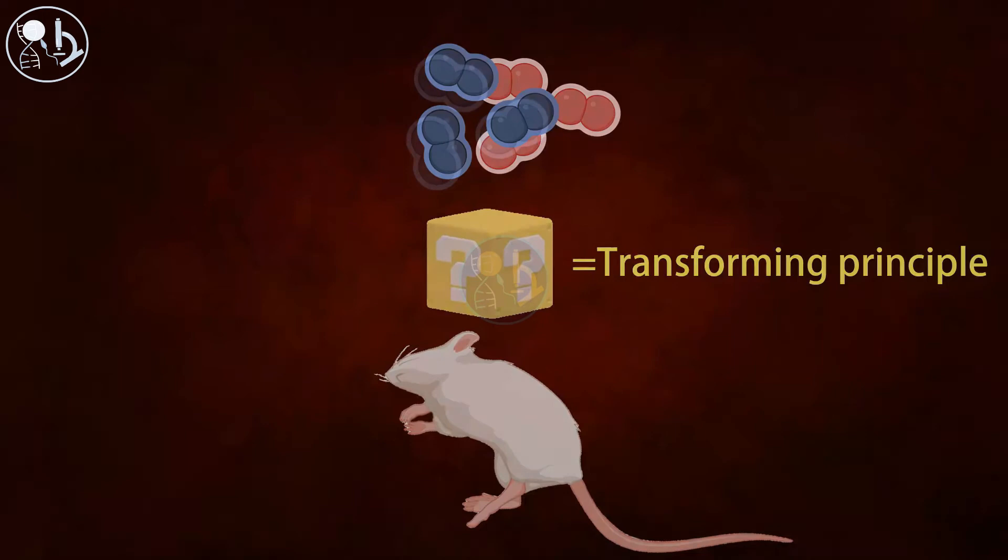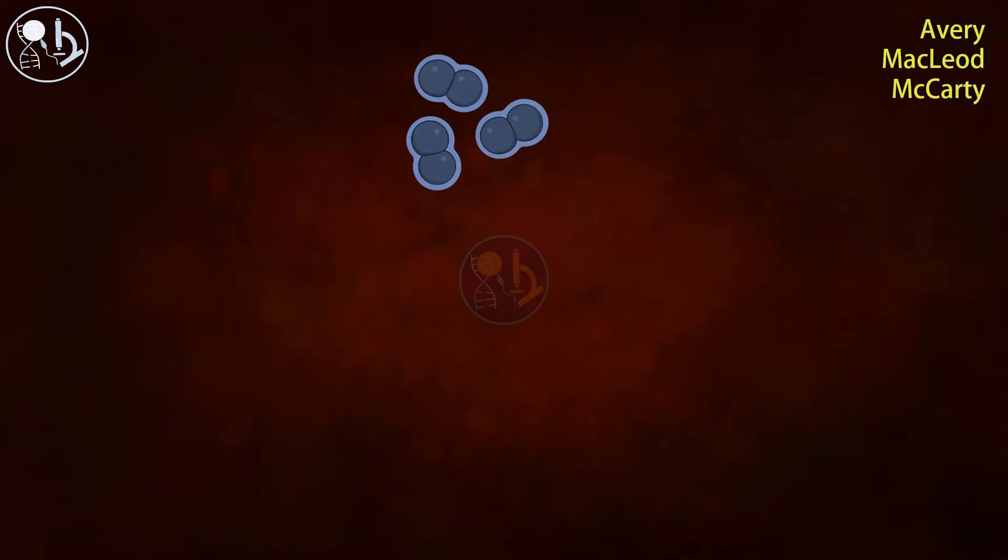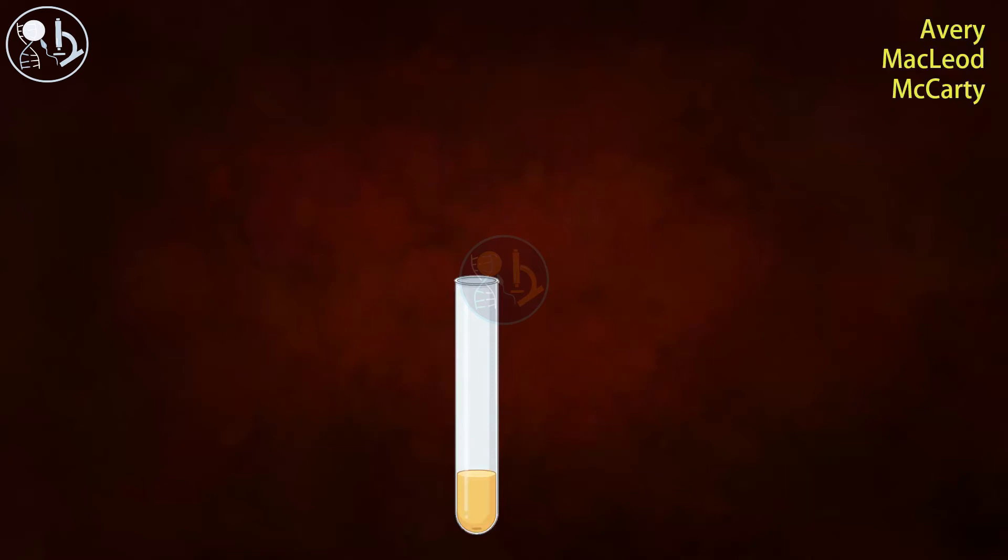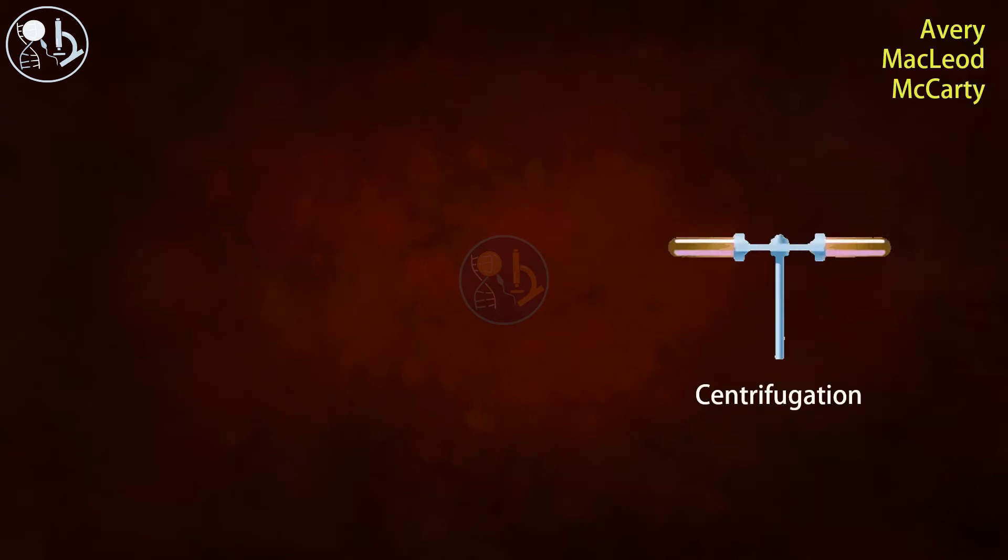After the publishing of Griffith's results, Avery, MacLeod, and McCarty started to find out this transforming principle. They first took heat killed 3S and then lysed it with the help of detergent. Then they centrifuged it to separate the cellular components.